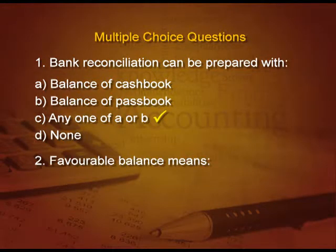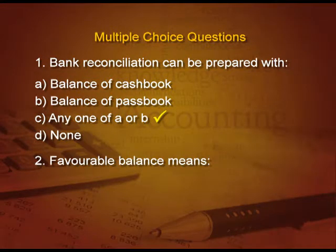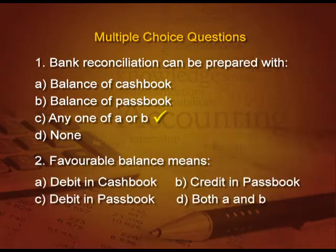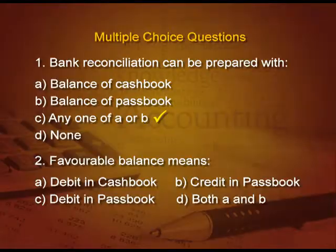Next question: favorable balance means A) debit in cash book, B) credit in pass book, C) debit in pass book, or D) both A and B. The answer is both A and B, because debit in cash book is also favorable and credit in pass book is also favorable.